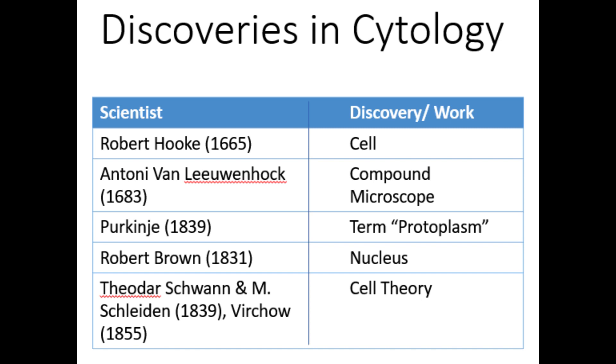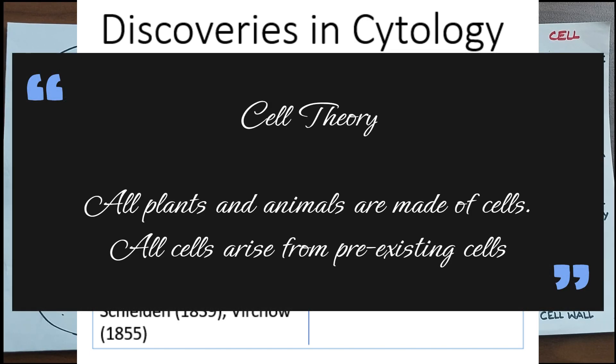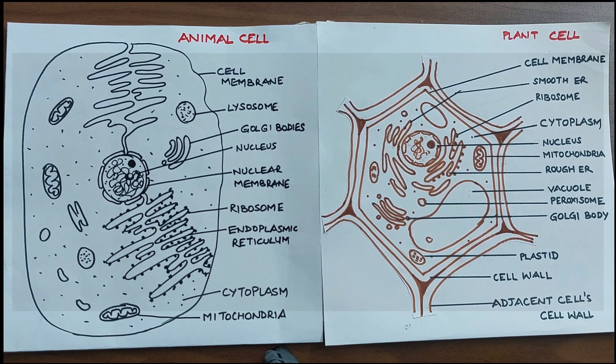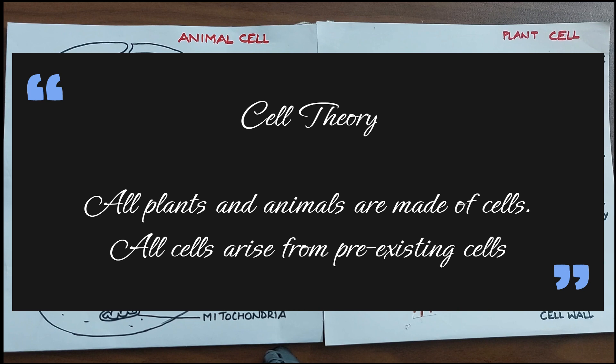There was a long gap and it was only in 1831 Robert Brown first observed the nucleus. He coined the term from the Latin word nuclei which means little nut. Then in 1839, Theodore Schwann and Matthias Schleiden realized that all plants and animals are made up of cells, and later in 1855 Virchow further explained that all cells arise from pre-existing cells. These two points together form what is known as the cell theory.